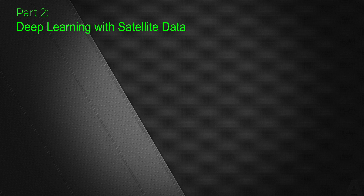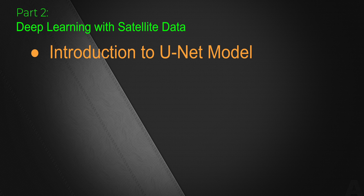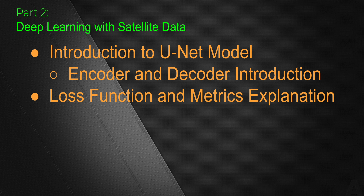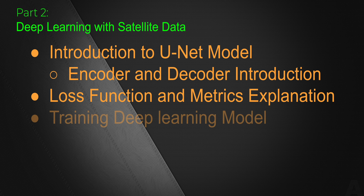Part two of our video is all about performing deep learning with satellite data. First we need to learn the U-Net model which we are going to use as the basis for our deep learning process. We need to know the encoder and decoder, which are the integral parts of our model architecture. Next we also need to learn about the loss functions we are going to use in our training process and the metrics which will help us evaluate the deep learning process outcome. Using a Jupyter notebook in a Google Colab environment, we will code our whole deep learning process, perform training, and the output will be our model.